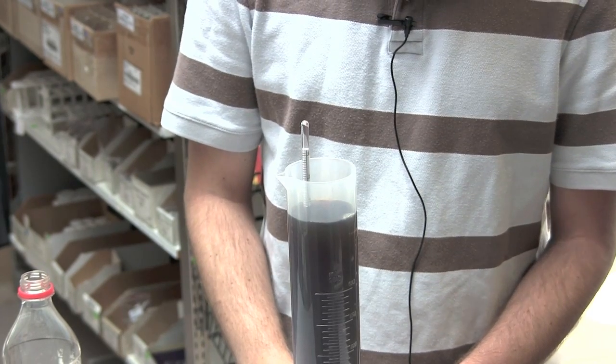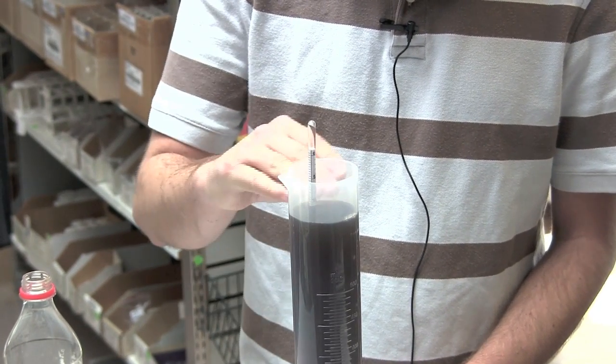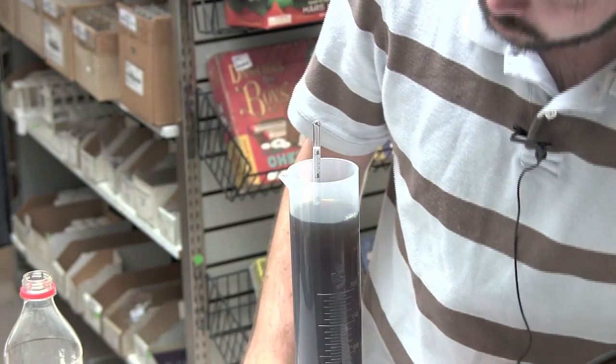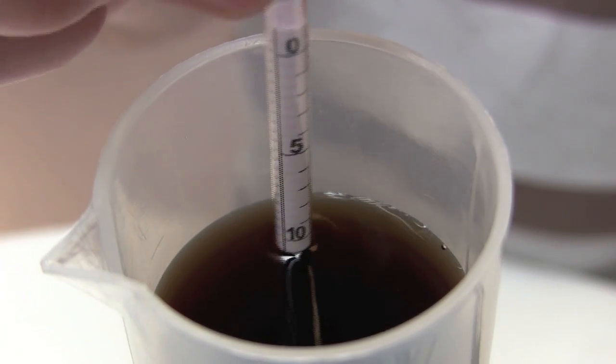Once the hydrometer levels out, take a reading where the surface of the liquid meets the scale on the hydrometer. Looks like in our case it's about 11.